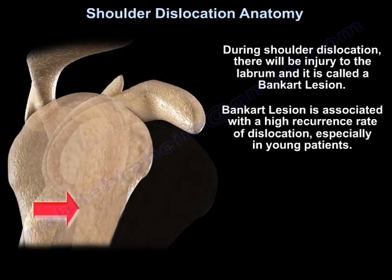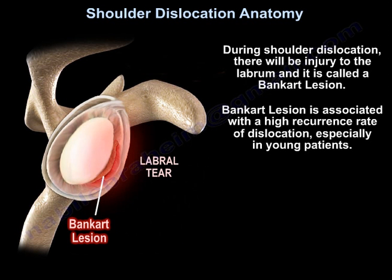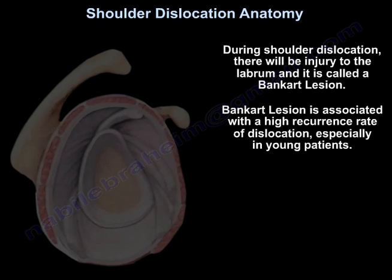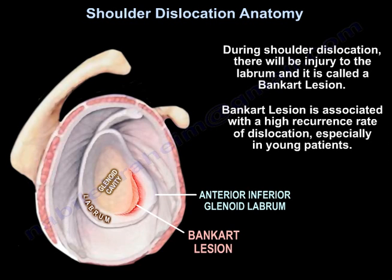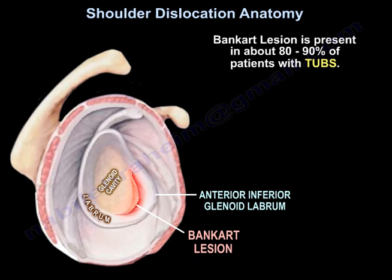During shoulder dislocation, there will be injury to the labrum and it is called a Bankart lesion. Bankart lesion is associated with a high recurrence rate of dislocation, especially in young patients. Bankart lesion is present in about 80 to 90% of patients with TAPS.